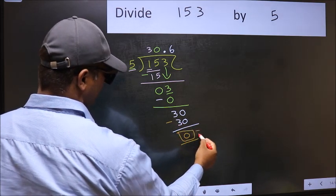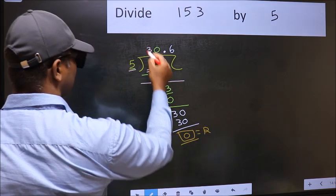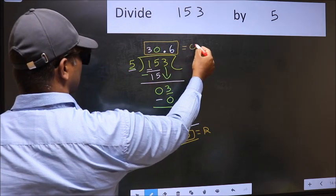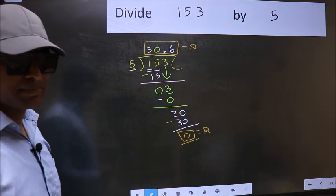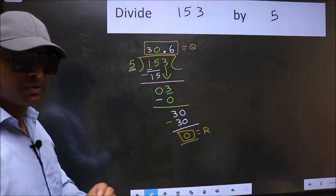So this is our remainder and this is our quotient. Did you understand where the mistake happens? You should not make that mistake.